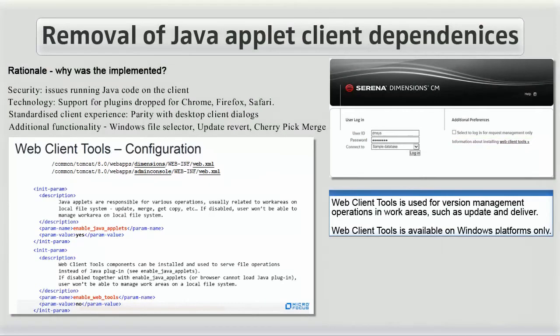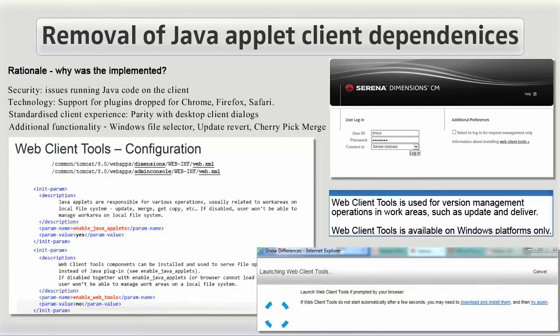The web.xml file controls the applet behavior from two settings: enable Java applets and enable web tools. If no Java is available and the web client tools have not been installed, you will be prompted at the relevant time to download the web client tools from the client.